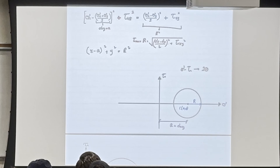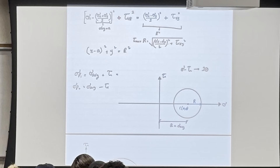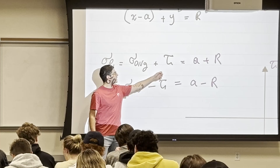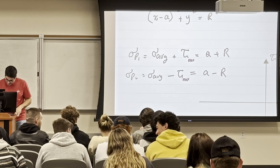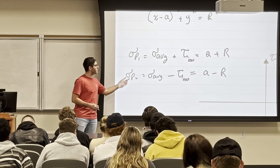σ_average was 'a' and τ_max is the radius r — that's what we established. So σ_average + τ_max is a+r, and σ_average − τ_max is a−r. Since Mohr's Circle represents stresses, at the rightmost point — a+r — that's σ_p1. At the leftmost point — a−r — that's σ_p2.